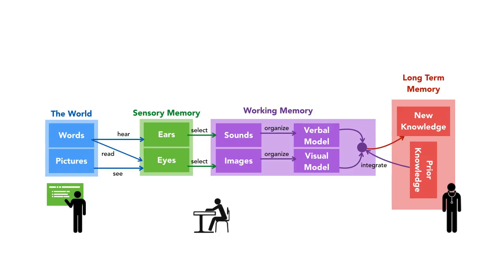Let's look at this cognitive model — this is how Richard Mayer depicts it. The world presents us with an infinite amount of data at any given moment, and our long-term memory has an expansive capacity for storage. The bottleneck, however, is getting it through short-term memory. Data comes to us from the world through our senses — our eyes and our ears — and our sensory memory can hold information for just a few seconds.